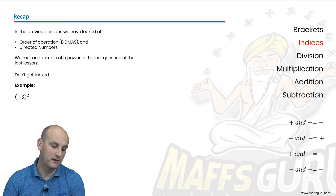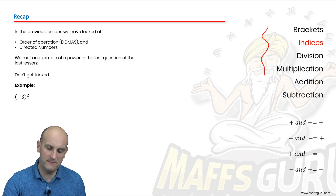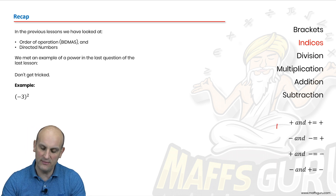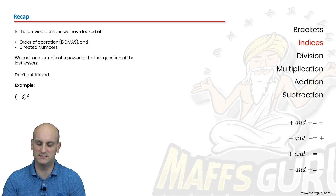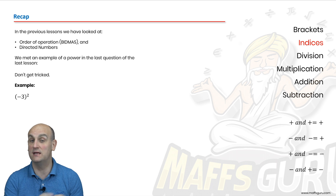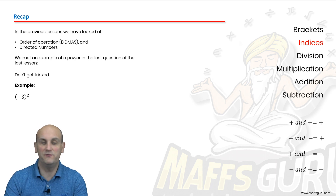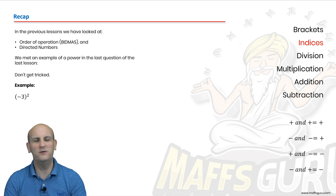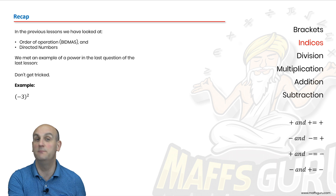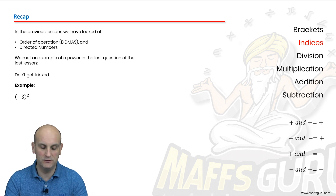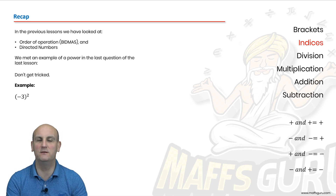Those are our learning objectives. In previous videos we looked at BIDMAS — my very first video on orders of operation — and directed number stuff. I've mentioned them to nudge your memory because they're going to come in handy. If you saw my previous video, did you see the last example, minus three squared? It was a bit weird because we hadn't really taught you power stuff. Minus three with that floaty two — that floaty two is called a power number, an index.